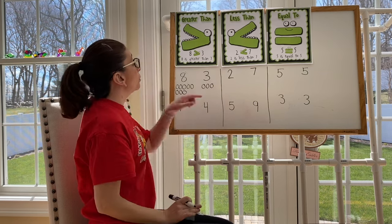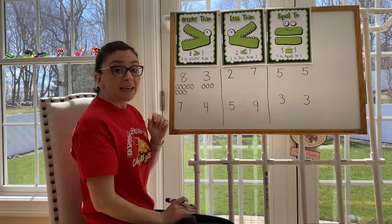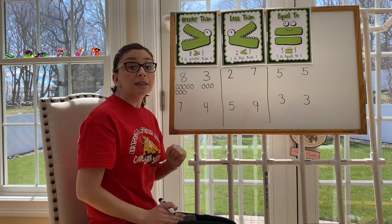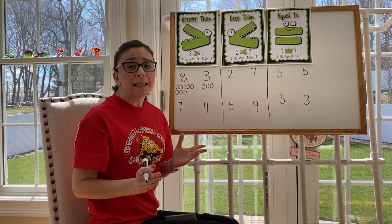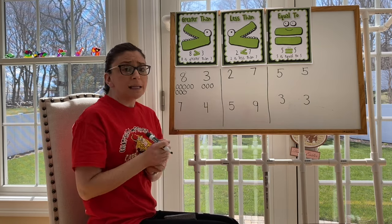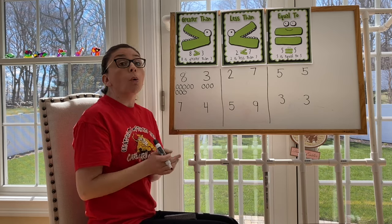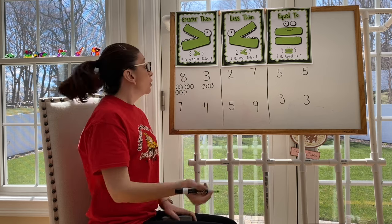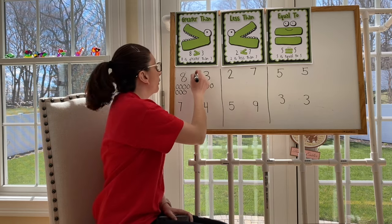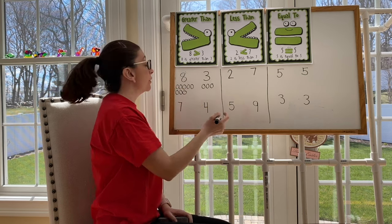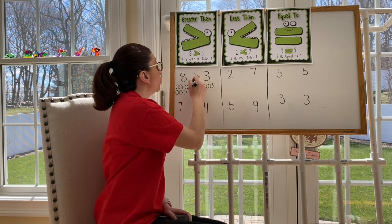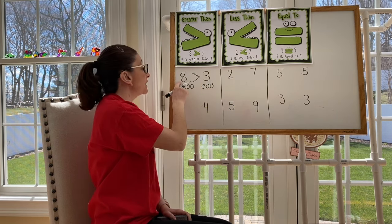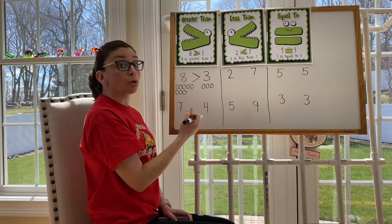Now if you look up here, you will see a symbol. It kind of looks like an alligator mouth. Now, pretend that this arrow is an alligator mouth. An alligator is always hungry. Does he want to eat a small amount or the biggest amount? He wants to eat the biggest amount. So when I draw my arrow, if I'm saying a number is greater, I need to make sure that the biggest part of my arrow faces the bigger number, the greater number.